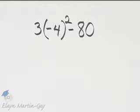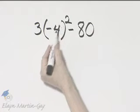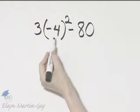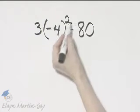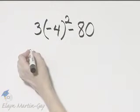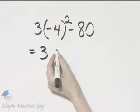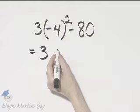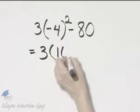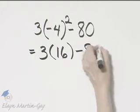Remember order of operations as we simplify this expression. I'll evaluate this exponential expression first, and only the negative 4 is squared. So this is 3 times negative 4 times negative 4. That's positive 16 minus 80.